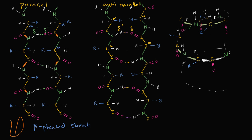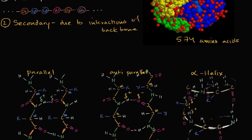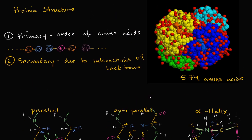Now this over here — we see that the backbone is going in a helical structure, and we have hydrogen bonds between the different layers of the helix. So over here, this oxygen is partially negative and this hydrogen is partially positive, so I have a hydrogen bond. And that's what gives this a helical structure — we would call this an alpha helix. So these interactions between the peptide backbone — that's the secondary structure of a protein.